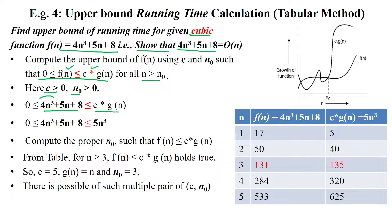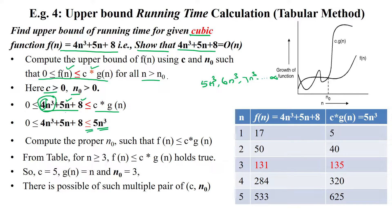Here the dominating term is 4n³, then another term 5n and constant 8. When comparing with 5n and 8, n³ is the dominating term. The coefficient of n³ is 4. The next term after 4n³ would be 5n³, 6n³, 7n³, and so on until infinity. So the next term we will consider is 5n³, which is greater than 4n³.